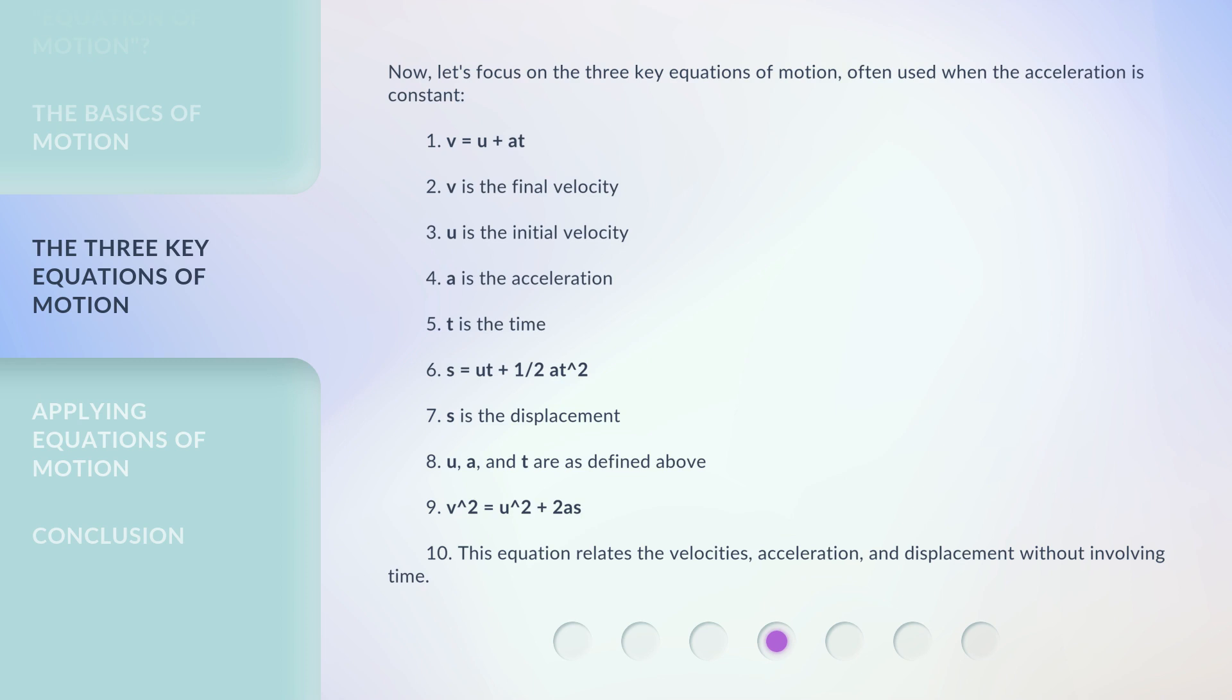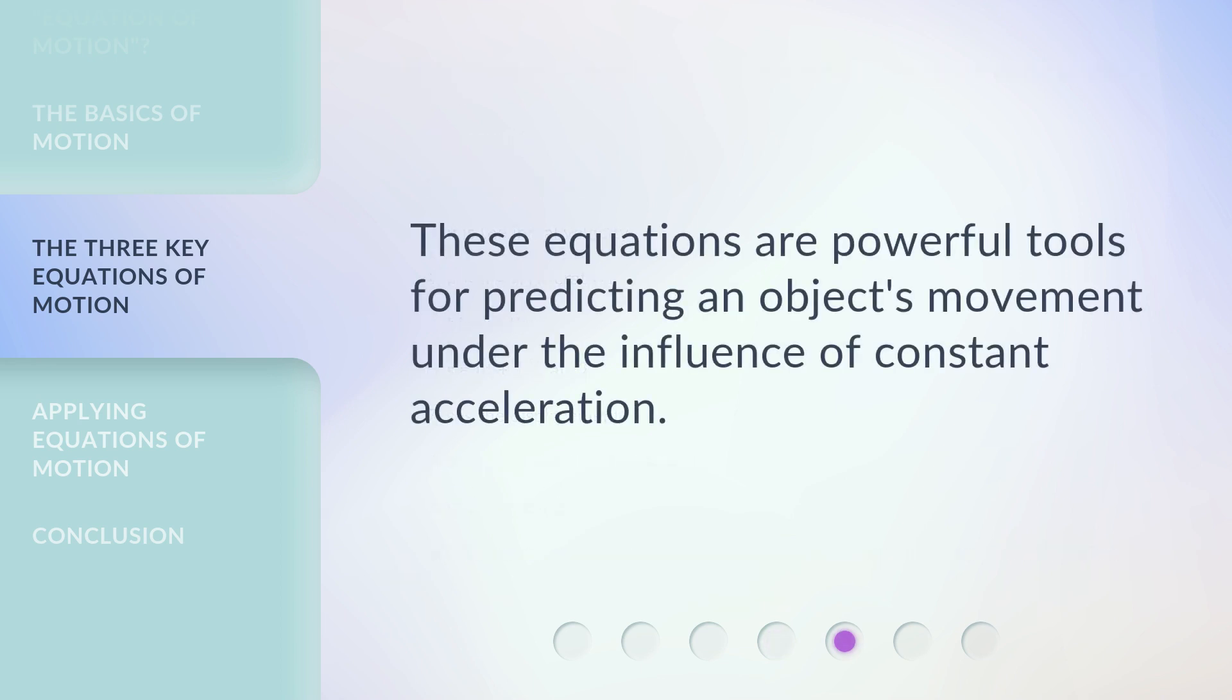V squared equals U squared plus 2 as. This equation relates the velocities, acceleration, and displacement without involving time. These equations are powerful tools for predicting an object's movement under the influence of constant acceleration.